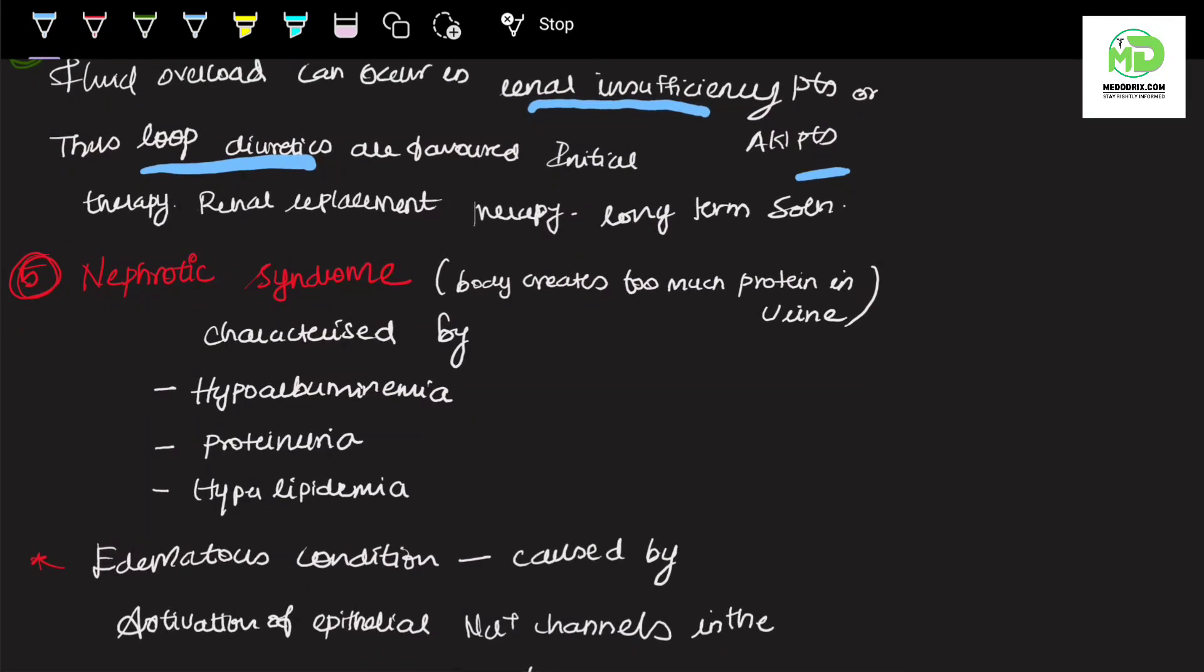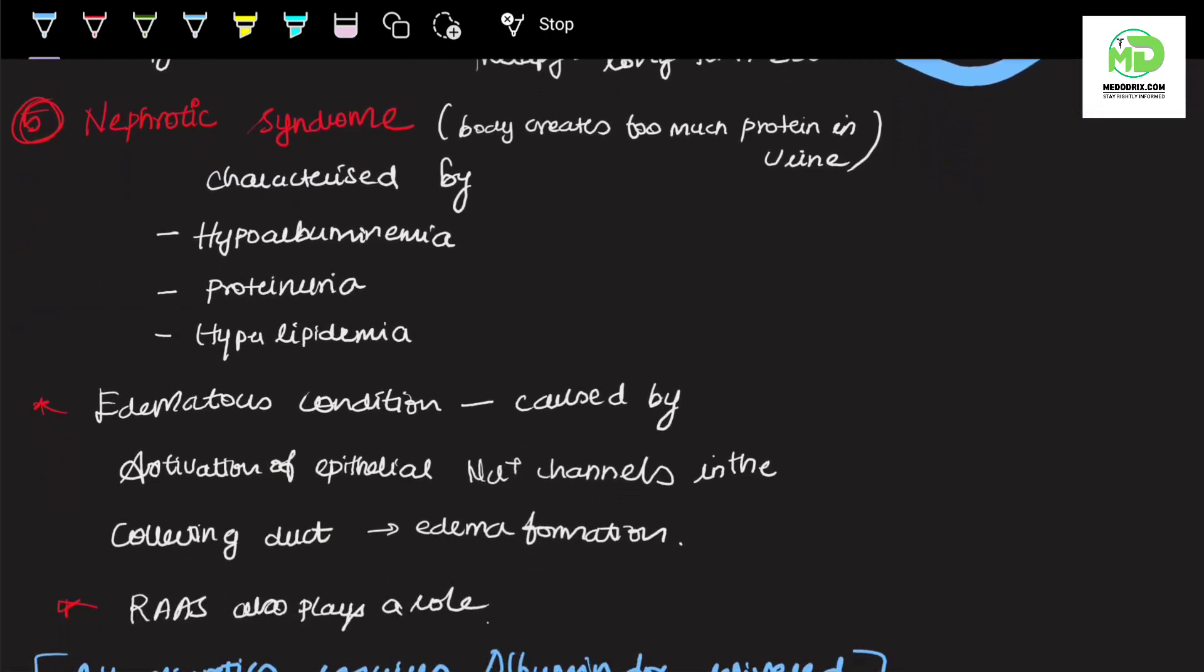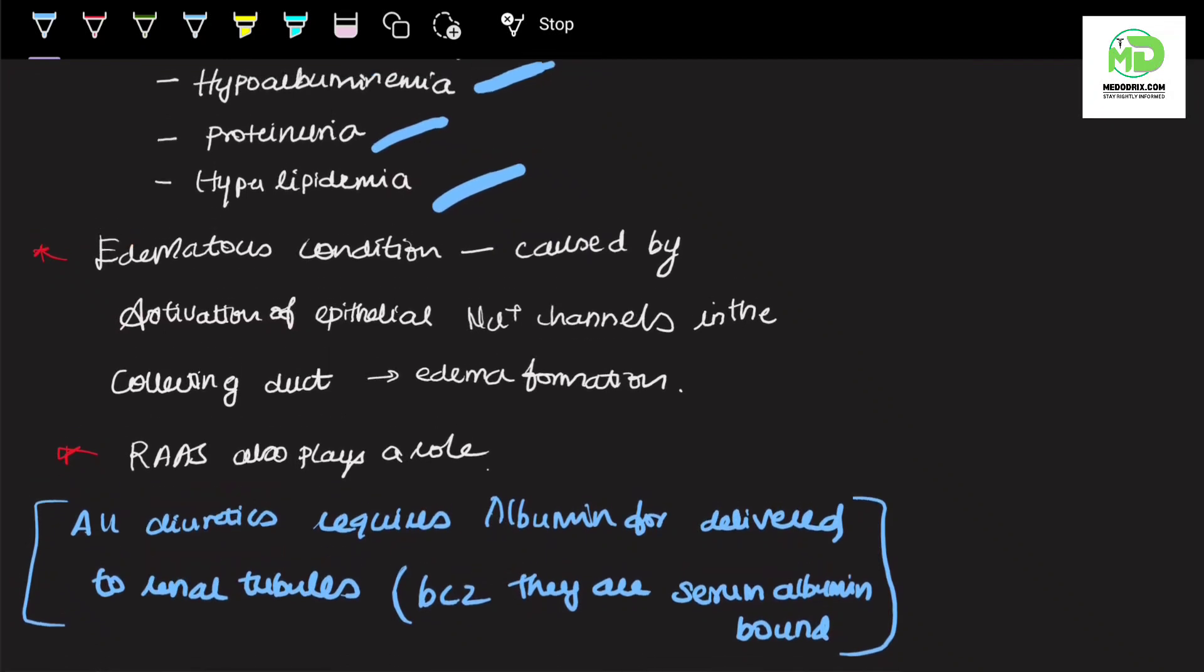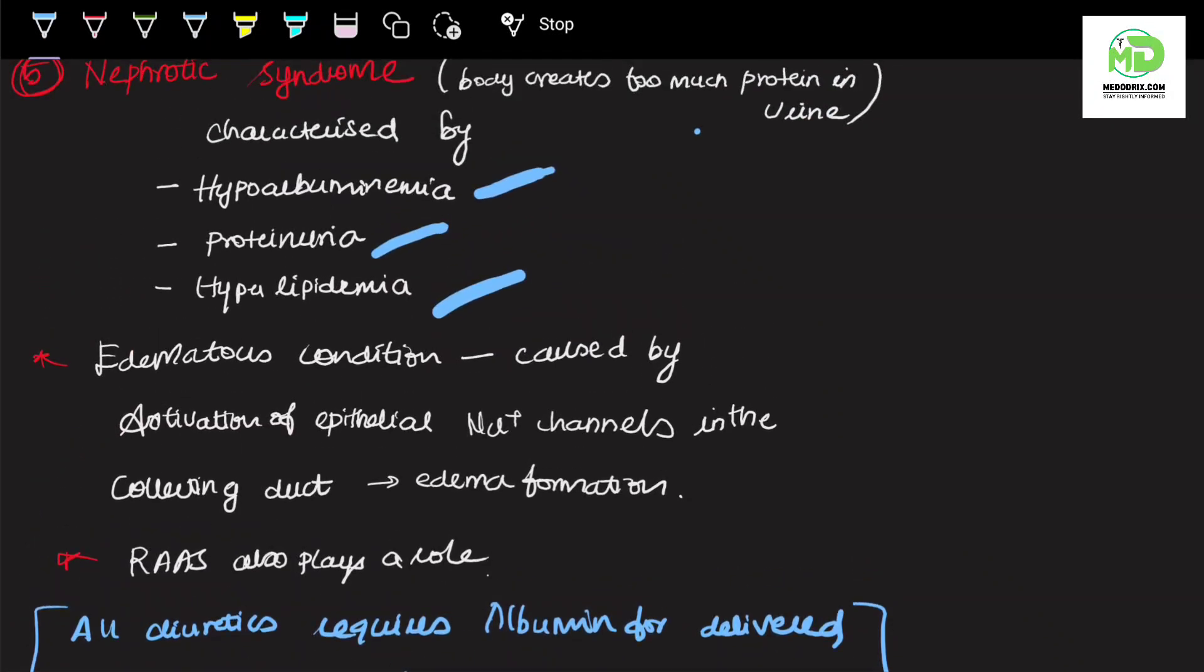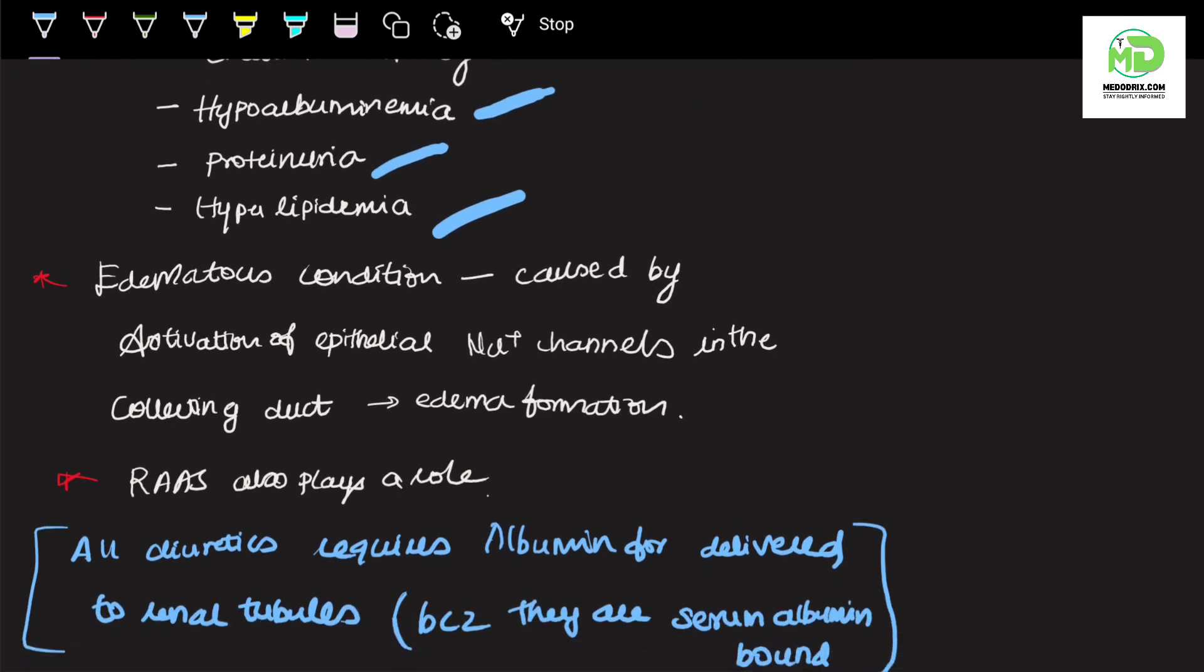Now, nephrotic syndrome. Nephrotic syndrome is when the body creates too much protein in the urine, called proteinuria. This is characterized by proteinuria, hypoalbuminemia, and hyperlipidemia. Remember, albumin level is reduced in the blood in nephrotic syndrome. The edematous condition is caused by activation of epithelial sodium channels in the collecting duct, which causes edema formation.